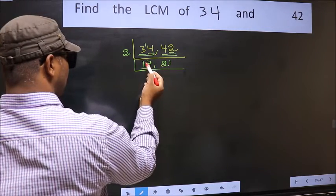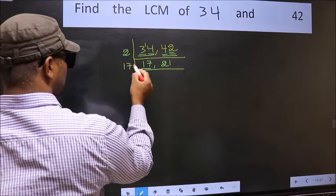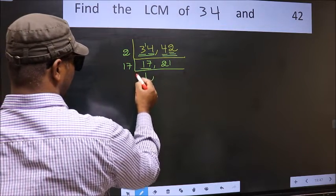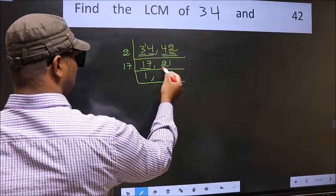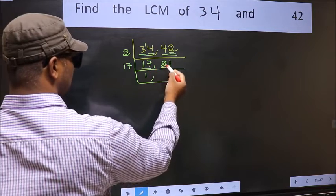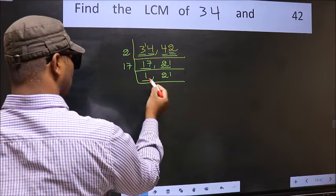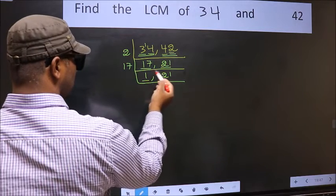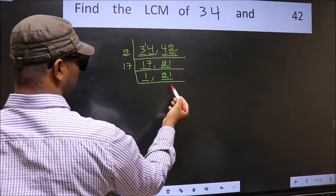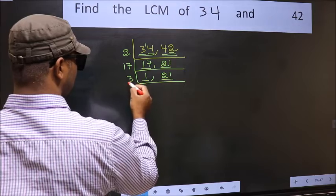Now here we have 17. 17 is a prime number, so 17 1s 17. The other number 21 not divisible by 17, so we write it down as it is. We got 1 here, so focus on the other number 21. 21 is 3 7s 21.